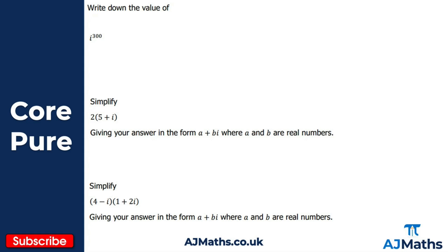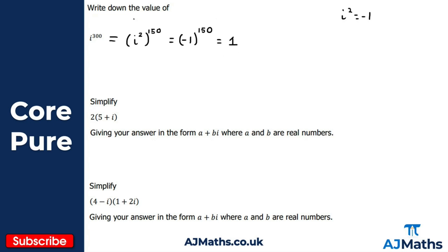Hopefully you got on okay with those practice questions. Let's look at what you should have got. For the first one, i to the power of 300: we're not expected to work through all 300 steps, so we manipulate the powers using rules of indices. We take i squared as our base, since i squared equals minus one, and raise it to a power such that two times that power equals 300 — that's 150. So we get minus one to the power of 150. Since the power is even, the result is positive one.